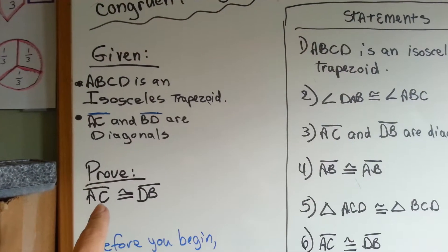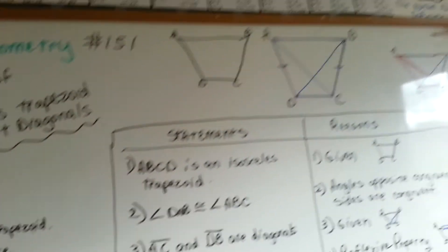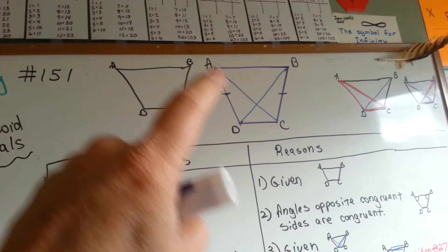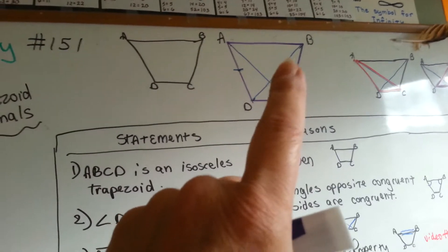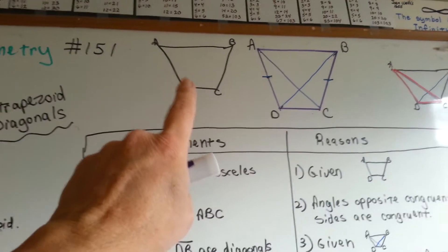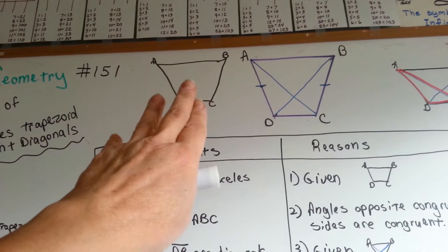We need to prove that line AC is congruent to DB. The diagonals are congruent. That's what we need to prove. Originally the drawing was sort of like this. This is a sloppy version because I did it really quick.